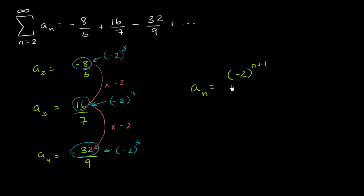Now let's think about our denominators. So we go from 5, so when n is 2, we're at 5. When n is 3, we're at 7. When n is 4, we're at 9. So notice, 5 is 2 times 2 plus 1. This right over here is 2 times 3 plus 1. This right over here is 2 times 4 plus 1.